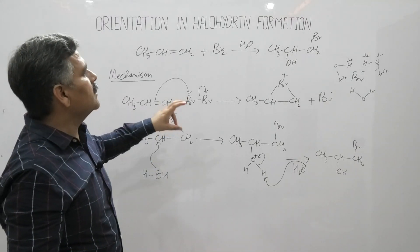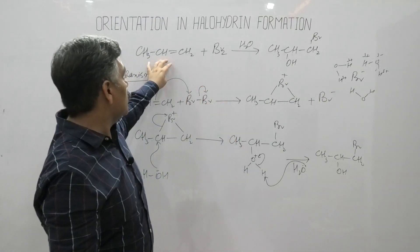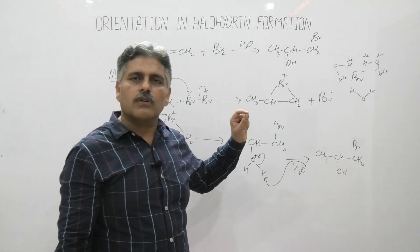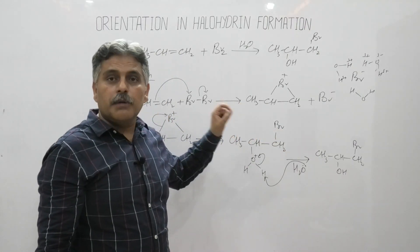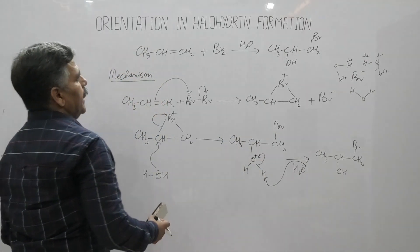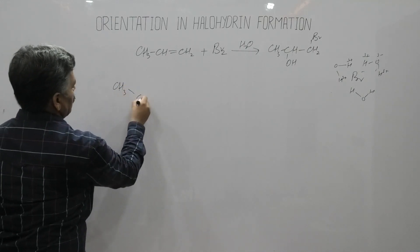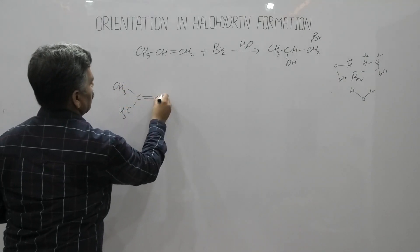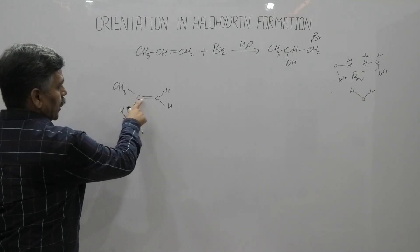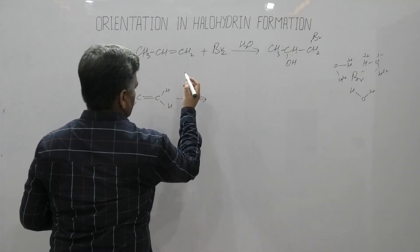The important factor in orientation in halohydrin formation is the structure of the alkene. If the alkene is unsymmetrical, the reaction follows the extended Markovnikov rule. Another example: CH₃C(CH₃)=CH₂ is also unsymmetrical because the two carbons of the carbon-carbon double bond are not equivalent. When it reacts with Cl₂ in water, the same orientation applies.